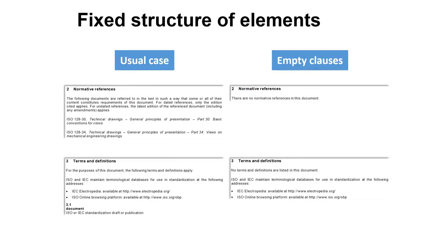In the usual case where a document has normative references, clause two includes the text: 'The following documents are referred to in the text in such a way that some or all of their content constitutes requirements of this document. For dated references, only the edition cited applies. For undated references, the latest edition applies.' If there are no normative references, you still have clause two but simply state: 'There are no normative references in this document.' For terms and definitions, the same principle applies — the generic text is used, but if there are none to list, you replace the first part with 'No terms and definitions are listed in this document', while always keeping the generic text about terminological databases.